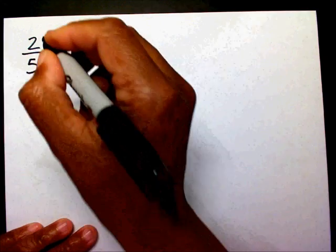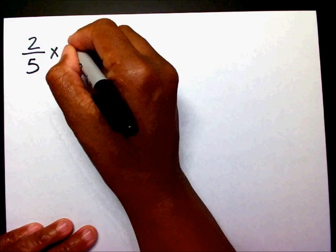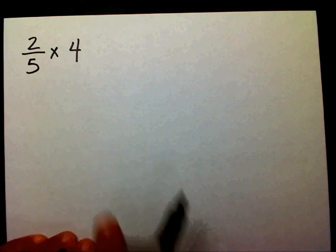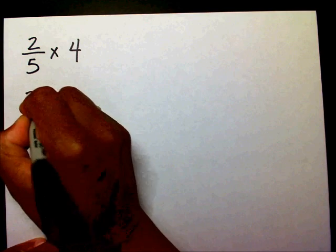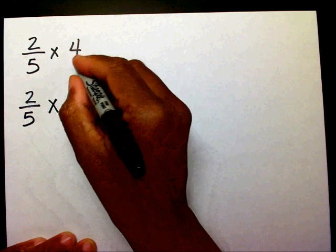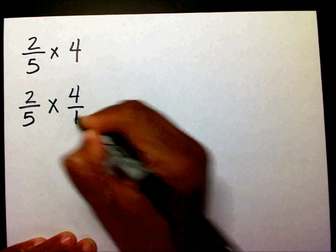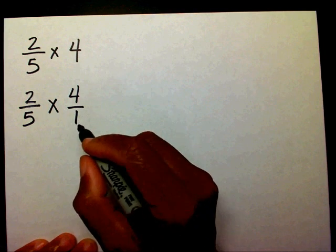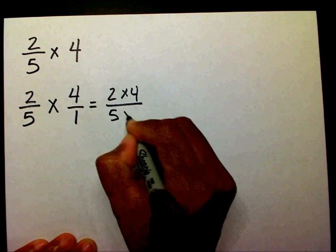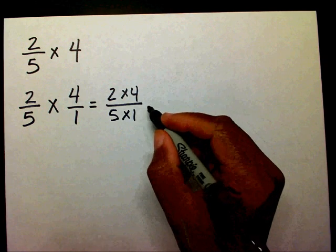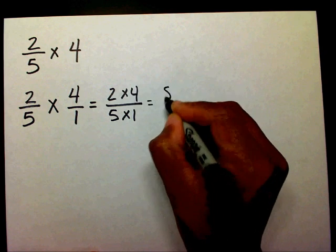Let's try another one. I have 2 fifths times 4. The first thing I need to do is turn this into a fraction. So I'm going to bring my 2 fifths down, times, and I'm going to change this 4 into a fraction — I'll write 4 over 1. Now I'm going to multiply across: 2 times 4, and 5 times 1. 2 times 4 is 8, and 5 times 1 is 5.